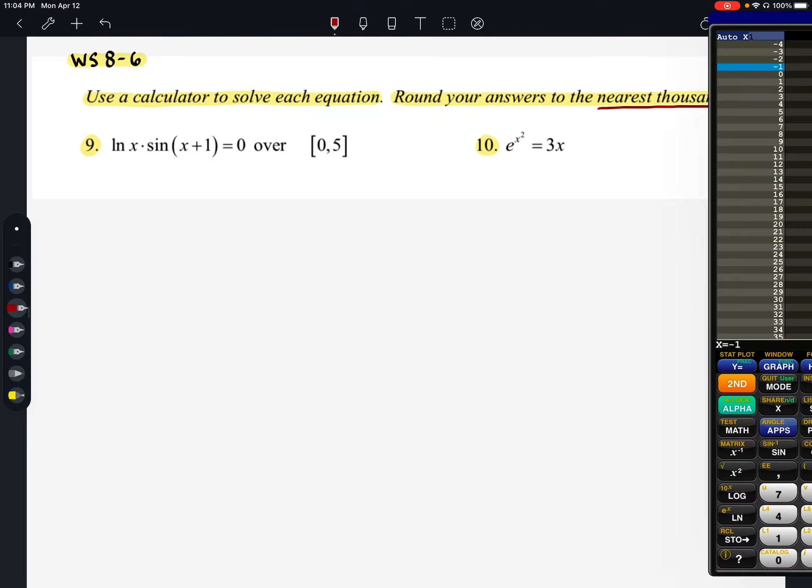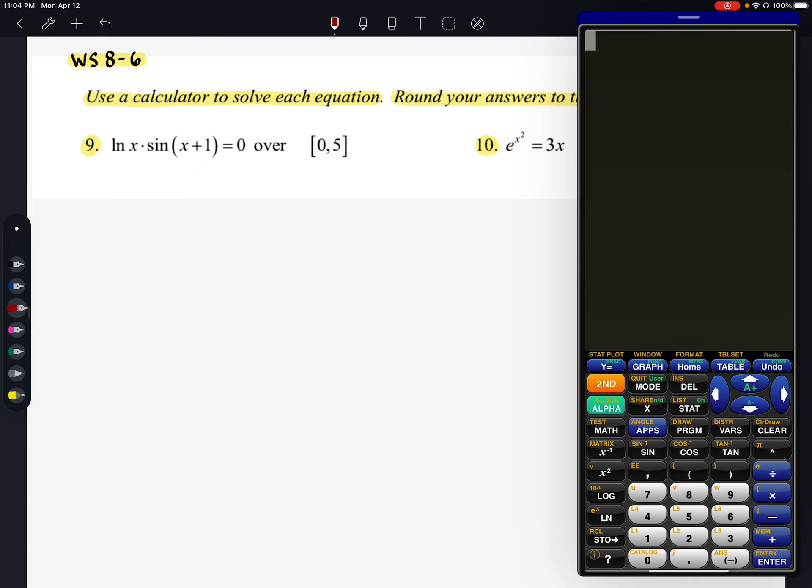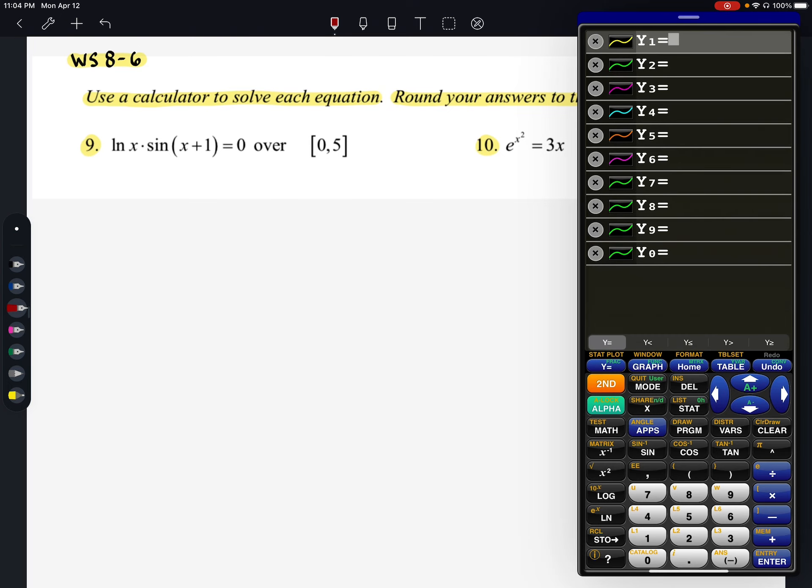I'm going to go ahead and pull out my calculator. I'm going to quit out. If we want to solve this on the calculator, you could use your solver. I prefer to use the graphing method. So what I'm going to do is go in and enter in this function. It's already set equal to zero, which is good because we're going to think of zero as like our Y, right? That'll be our output.